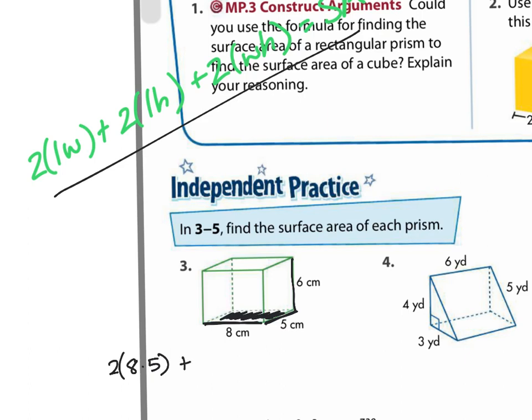Then I'm going to add that to two times the length times the height. So the length is eight and the height is six. And then I'm going to add that to two times the width times the height. And now I'm finding this space right here and this one right here, hence the two times. So I've got six times five.